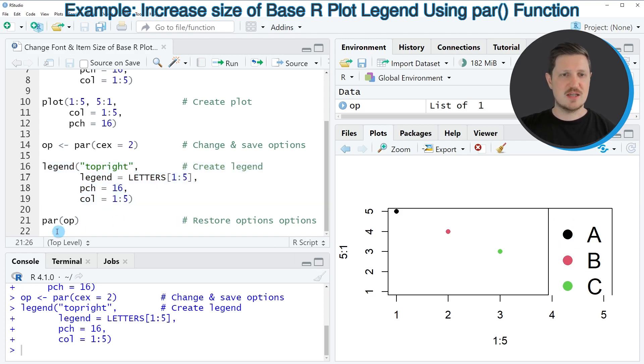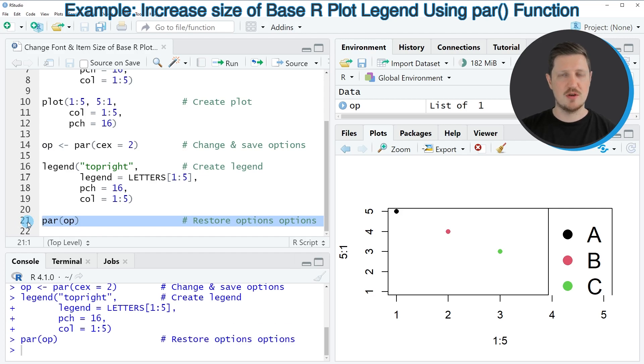In the next step, in line 21 I'm using the par function once again to restore our default specifications. In this case I have stored the default specifications in the data object OP, so after running line 21 our default specifications are restored.